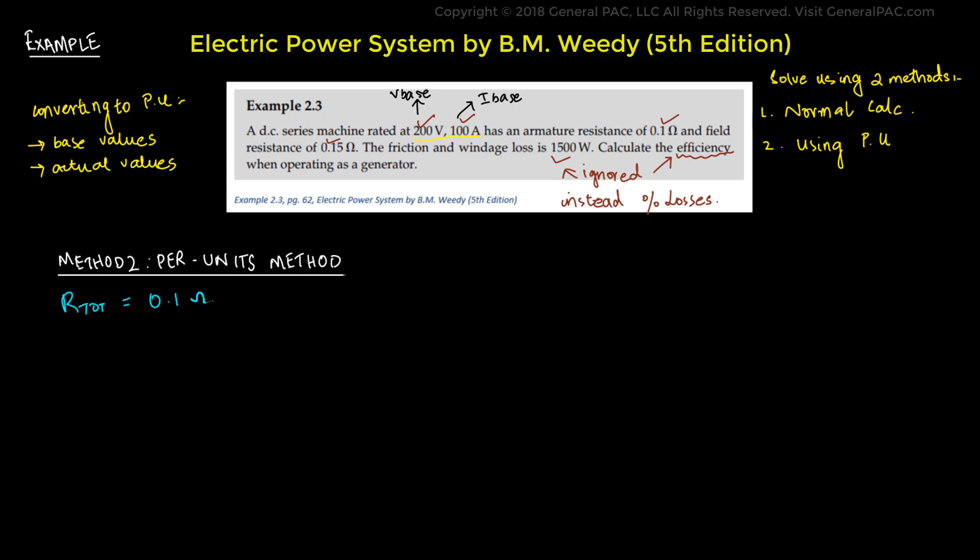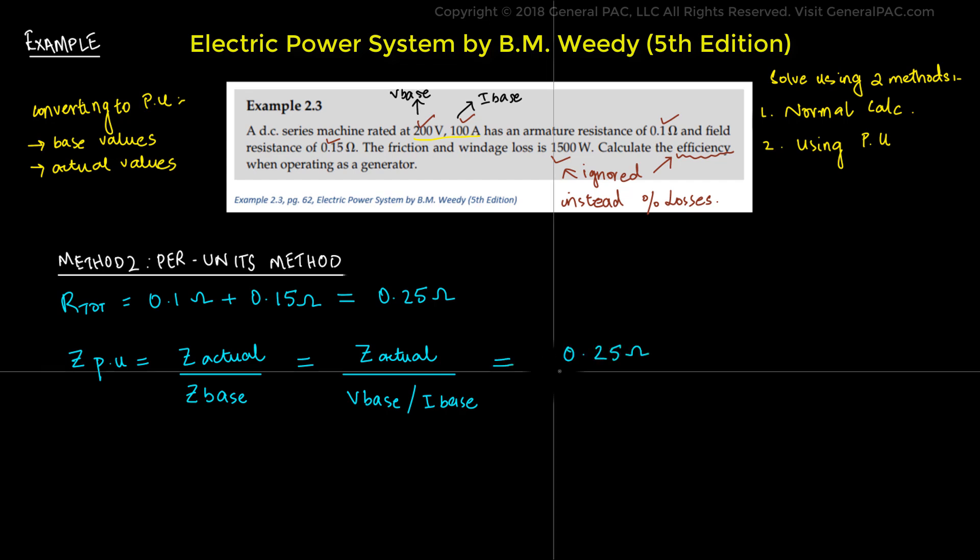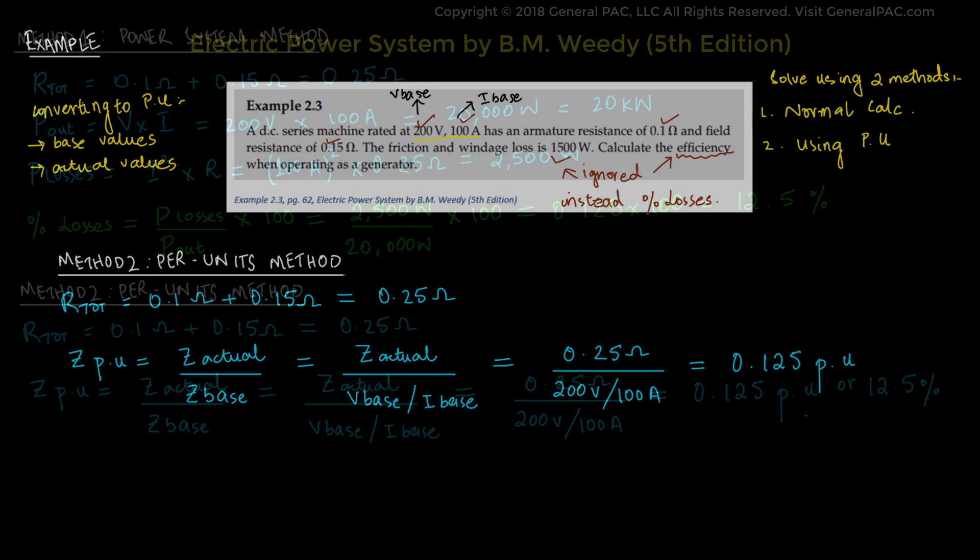The total resistance again is 0.1 plus 0.15 ohms, which gives us 0.25 ohms. The per unit impedance is simply equal to the actual impedance divided by the base impedance, which equals the actual impedance divided by base voltage over base current. This equals 0.25 ohms as the actual impedance divided by the base voltage of 200 volts over the base current of 100 amps, which gives us 0.125.